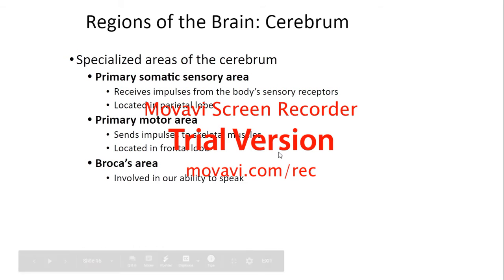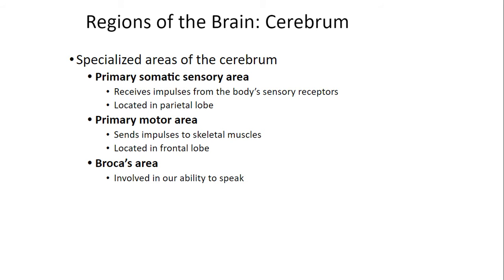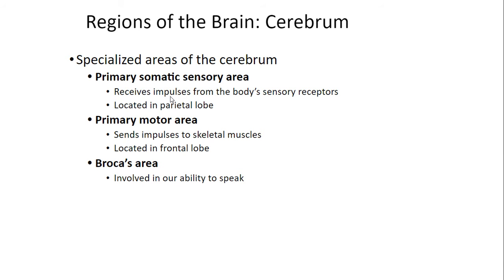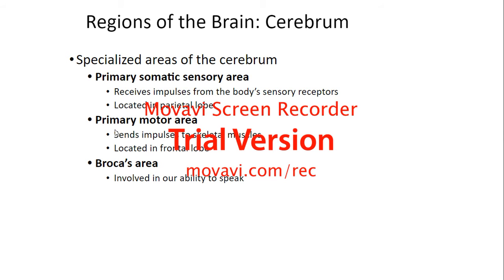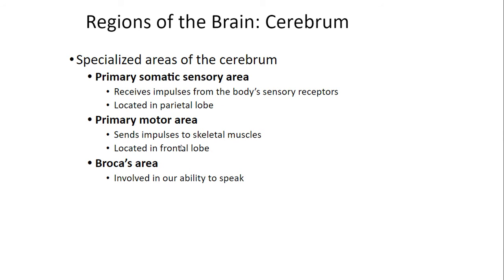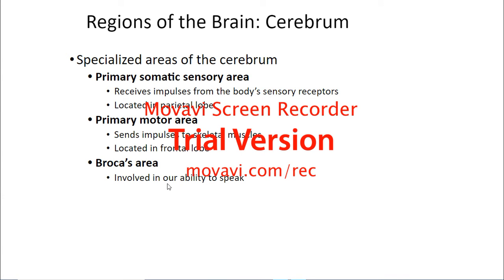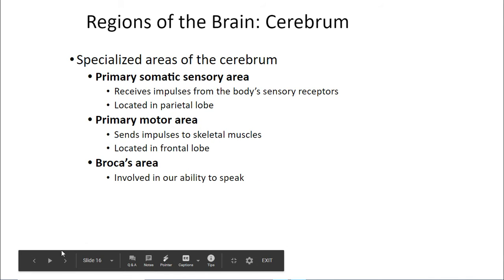You have specialized areas of the cerebrum. Through accidents and strokes, they learned what different parts of the brain do. You have a primary somatic sensory area in the parietal lobe, which is responsible for taking in sensory information — sensory receptors send information to the parietal lobe, and the parietal lobe decides what to do with it. The primary motor area, located in the frontal lobe, sends impulses to the skeletal muscles. The Broca area, also in the frontal lobe, is involved in our ability to speak.